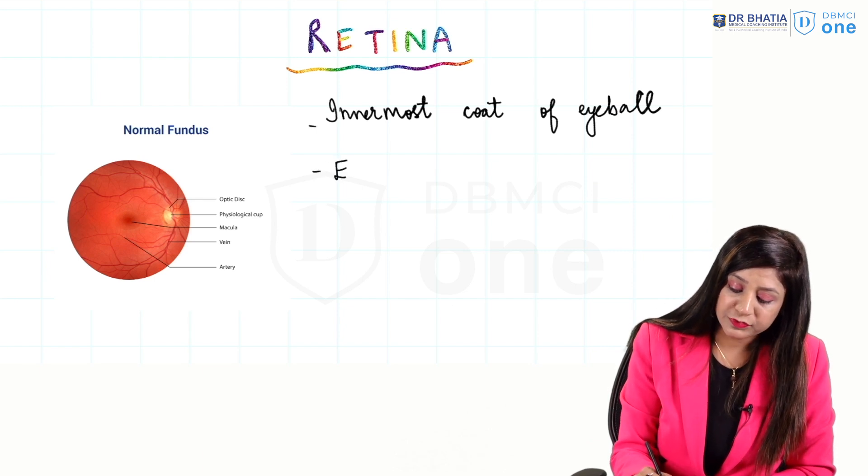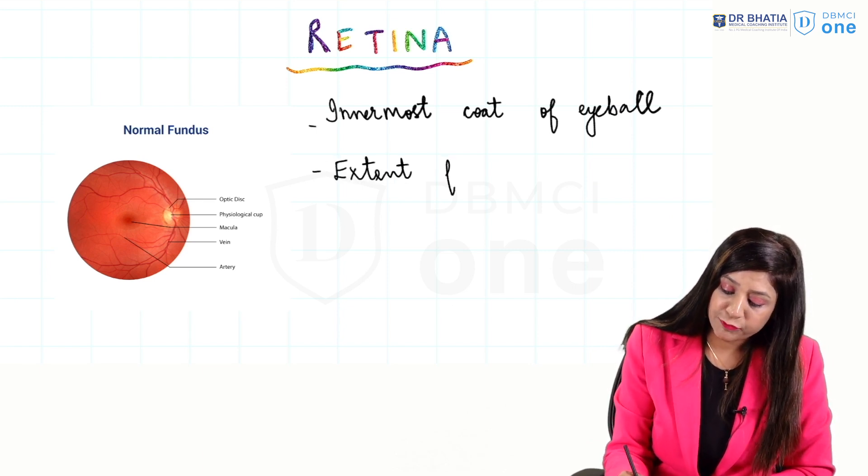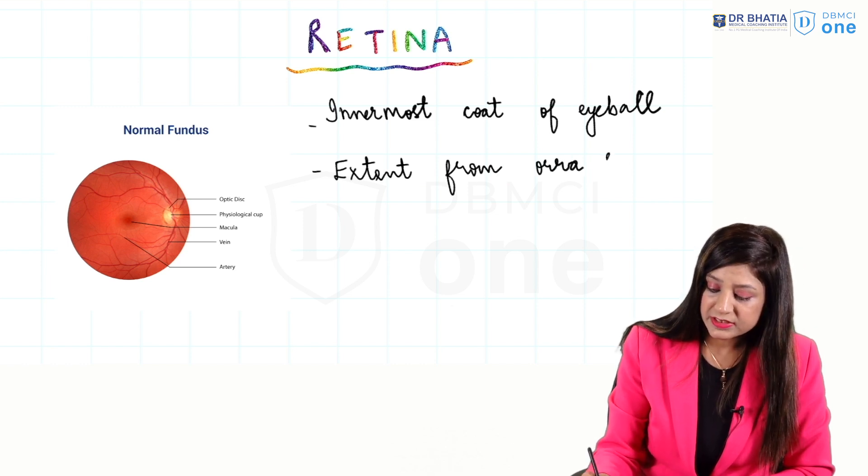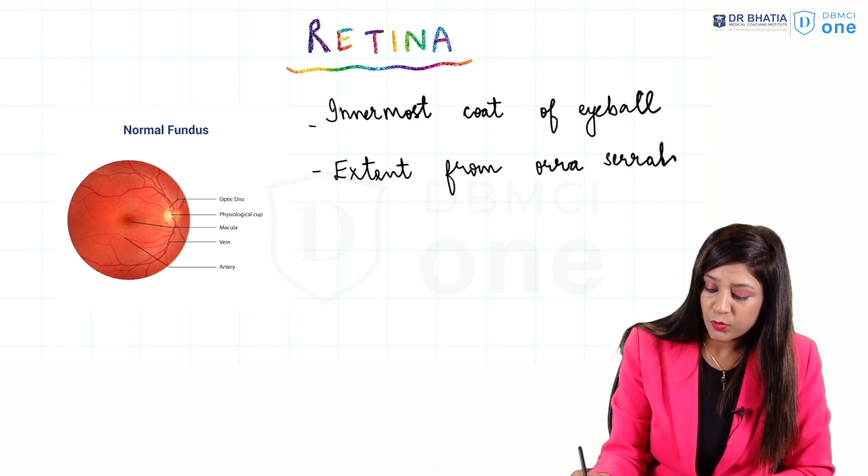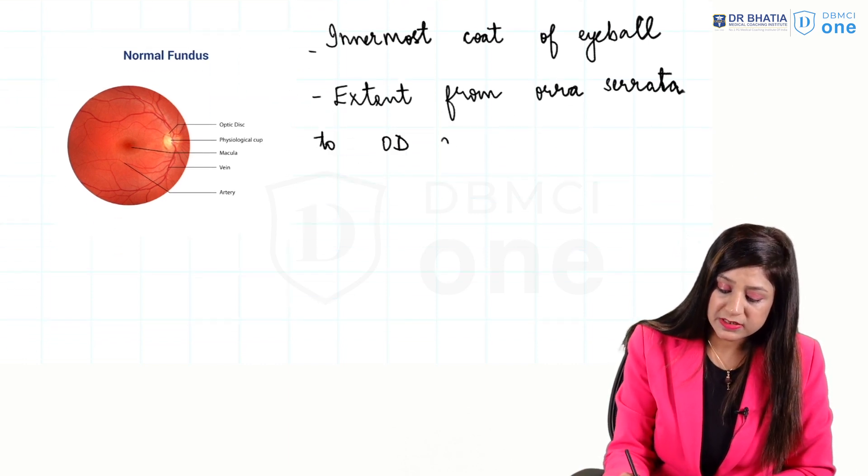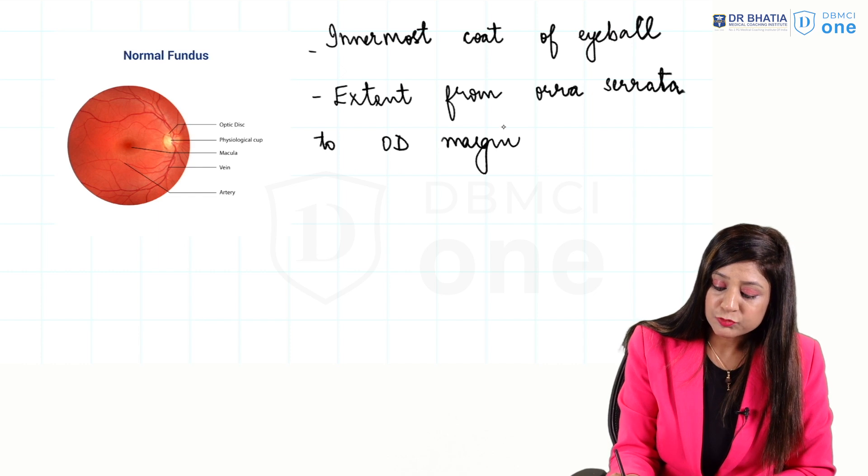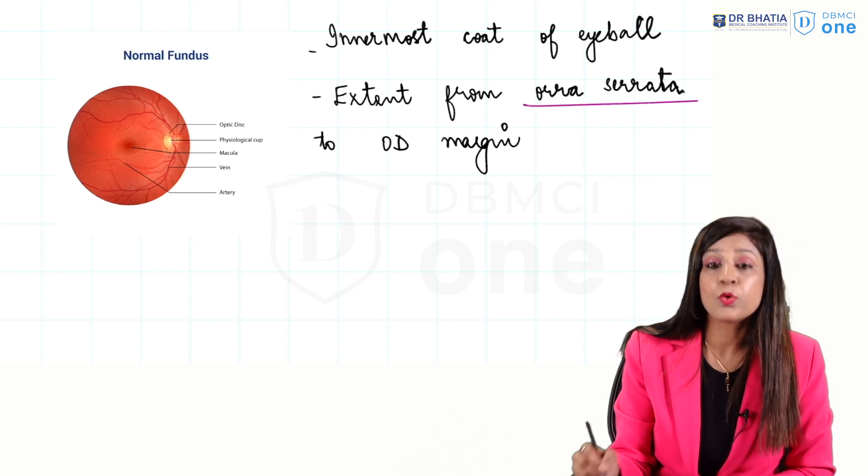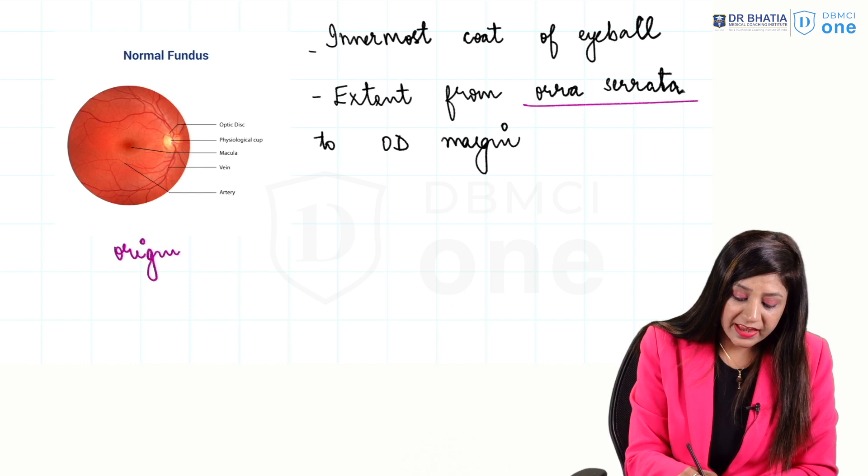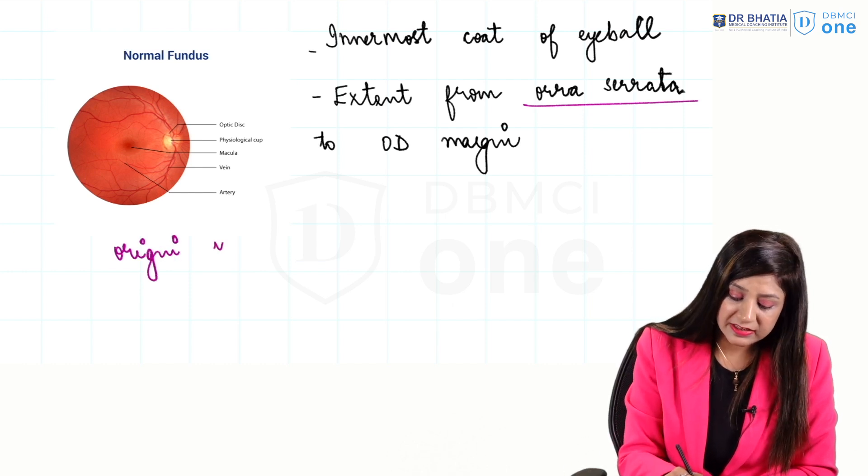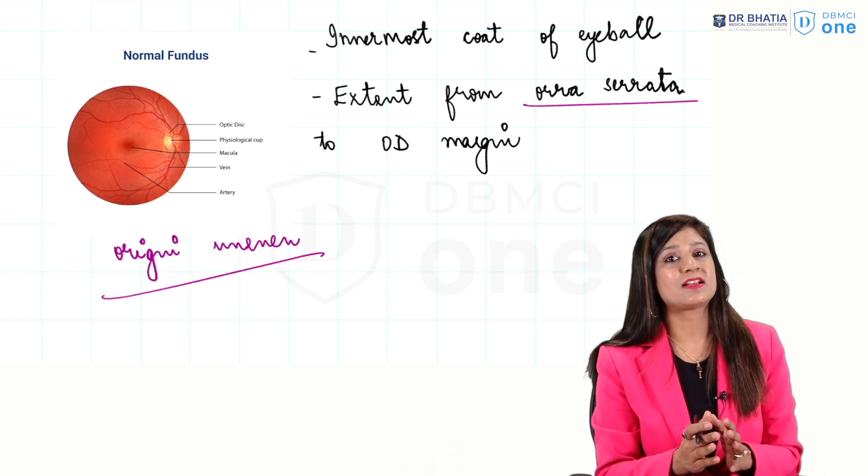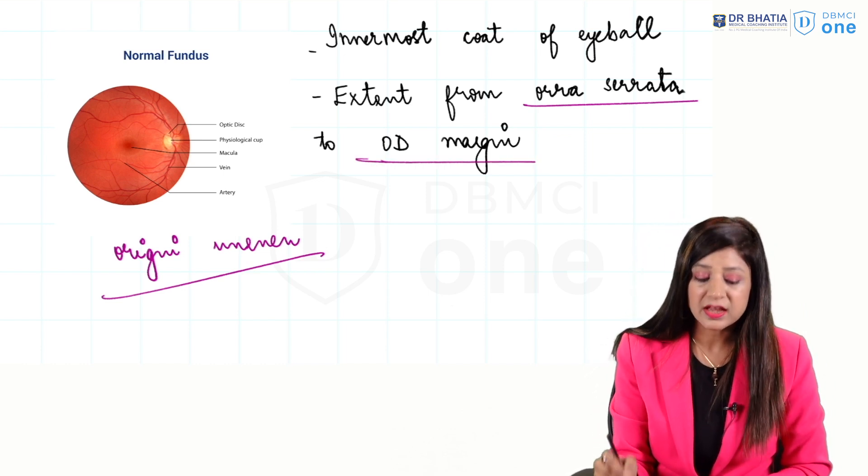If you look at the extent of the retina, it is extending from the ora serrata to the optic disc margin. You have to understand what is this ora serrata. Ora means origin and serrata means uneven, so there is actually an uneven margin from where the retina starts and it is going up to the optic disc.